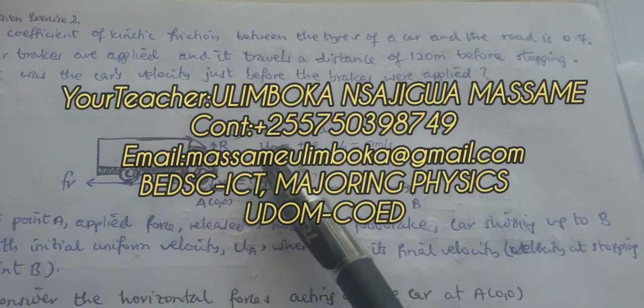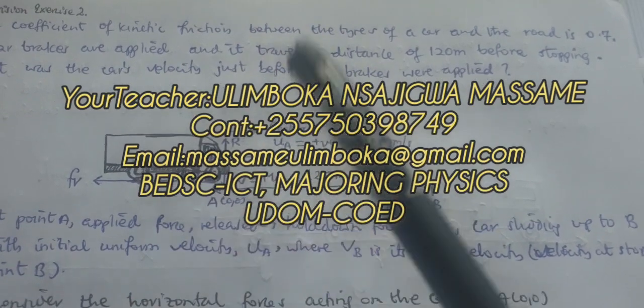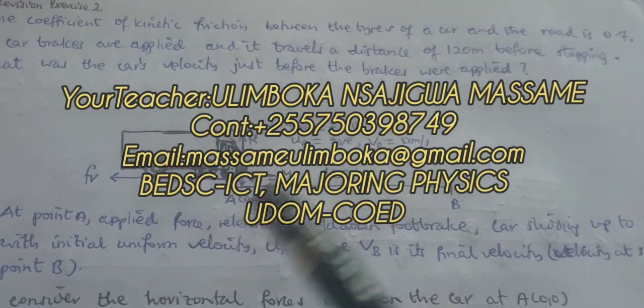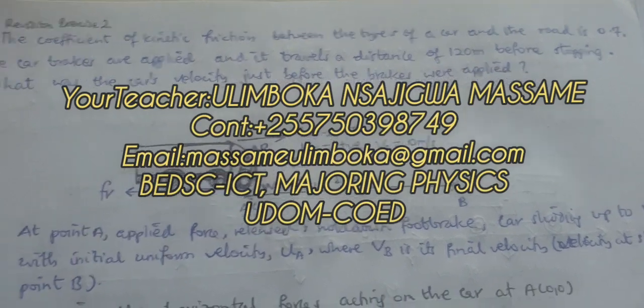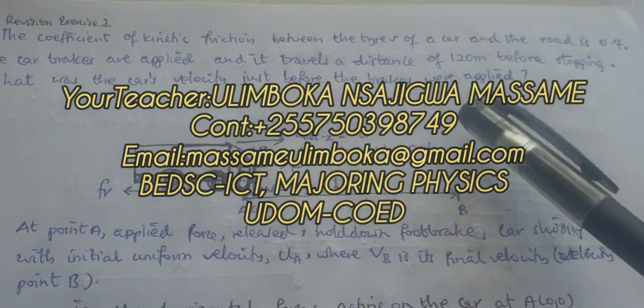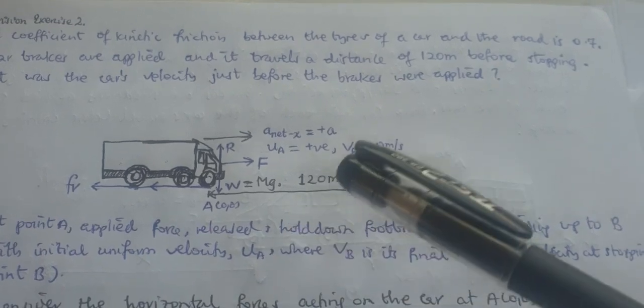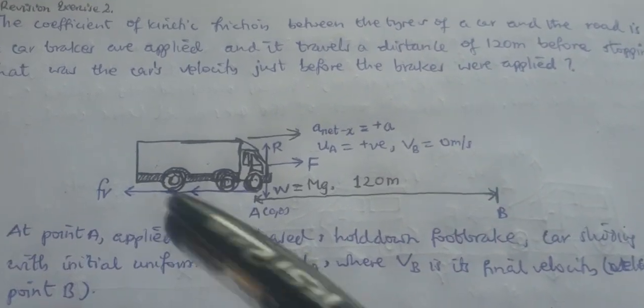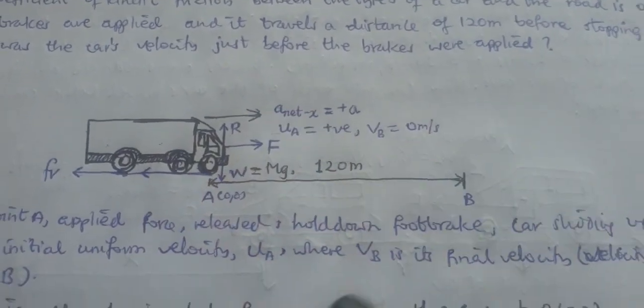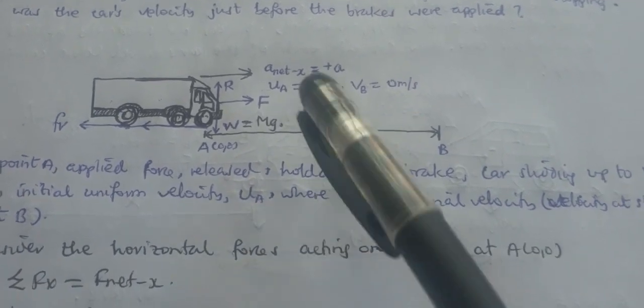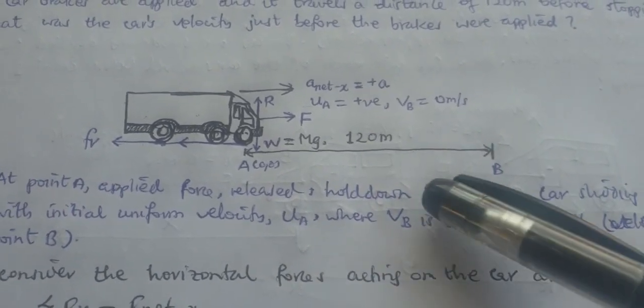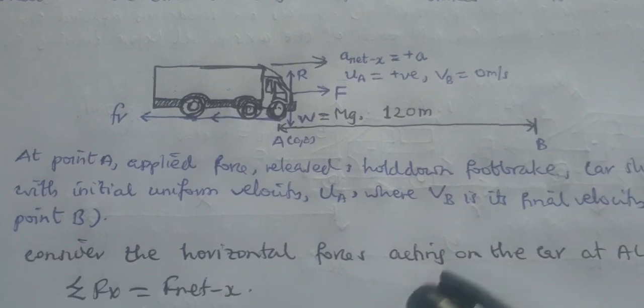We assign the vectors F, W, normal reactions, and friction, and we assign the net accelerations, uniform accelerations, uniform velocities, and the final velocity that is zero when it comes to rest at position B.